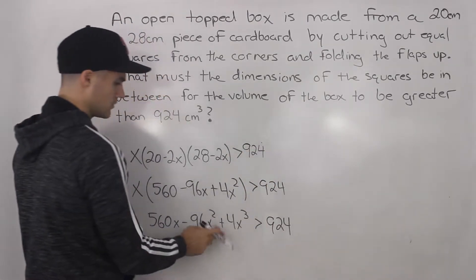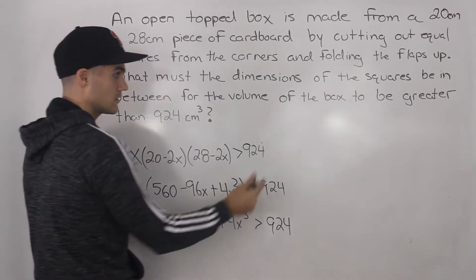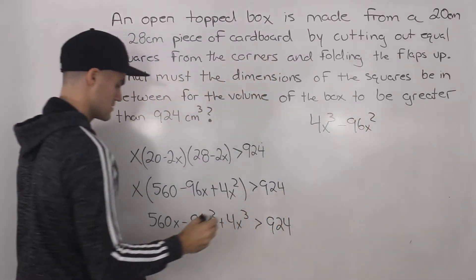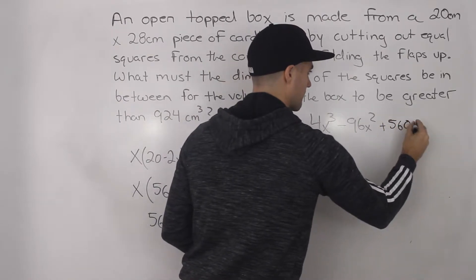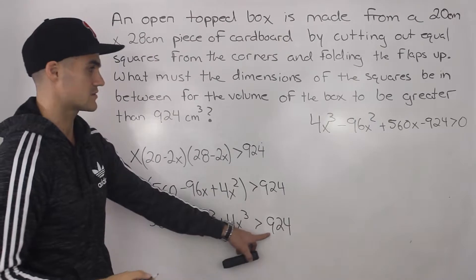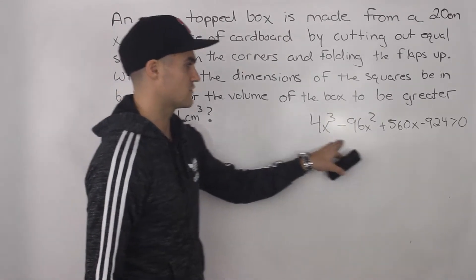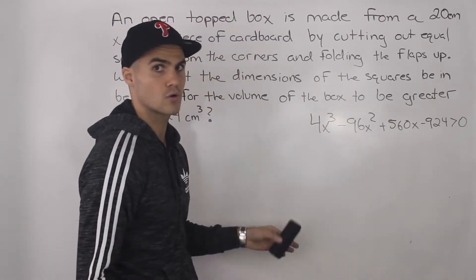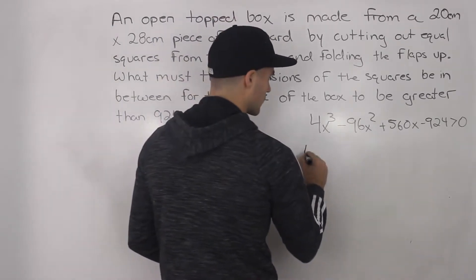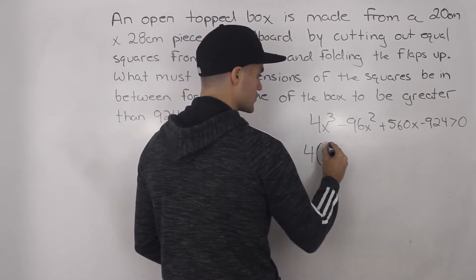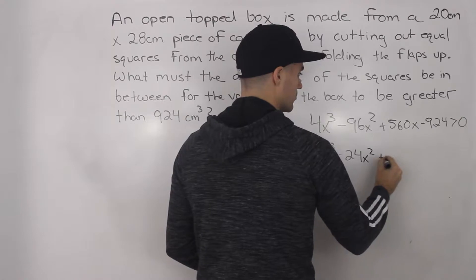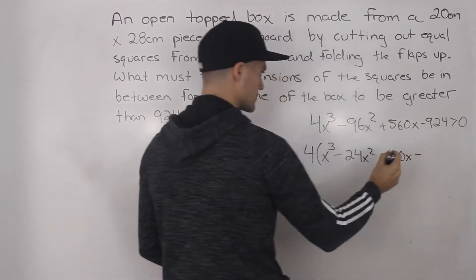Let's rewrite this polynomial in order from highest degree to lowest degree. So we have 4x cubed minus 96x squared plus 560x, and then bringing this 924 over, that's minus 924, and we have to find out when is that greater than 0. At this point, we have to factor this polynomial on the left side. First thing you always want to check — can you take anything out? You can't take out any constants because this 924 has no x attached to it, but notice we could take out a 4 from everything. So if we take out a 4 from everything, we'll have x cubed minus 24x squared plus 140x minus 231, which is greater than 0.